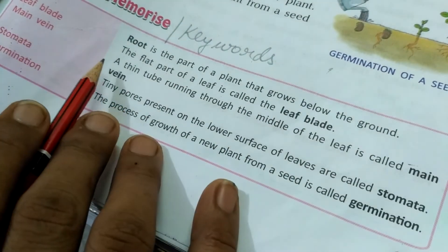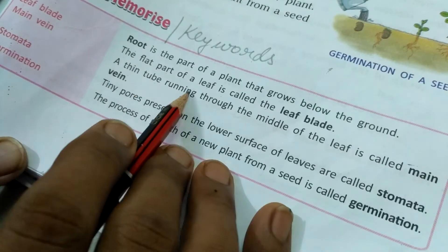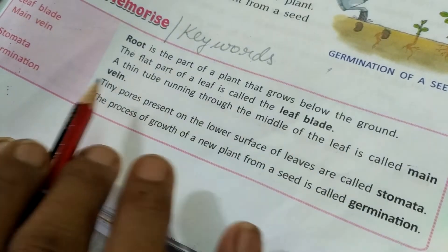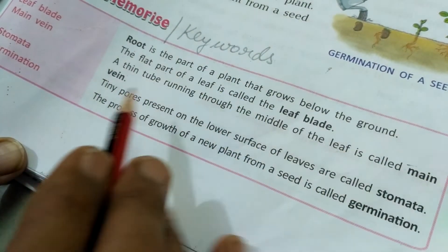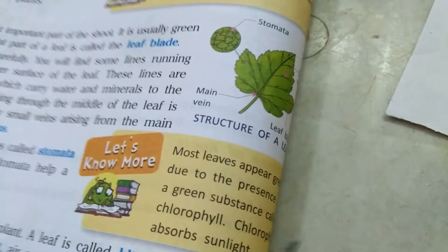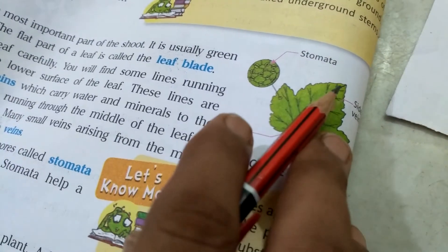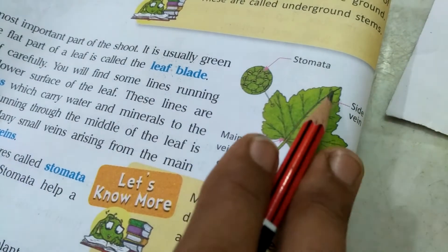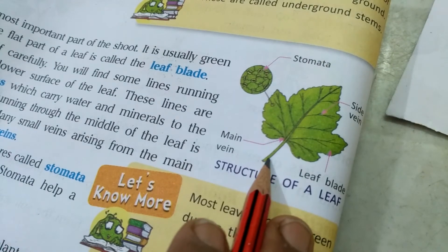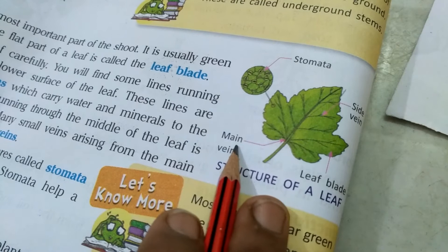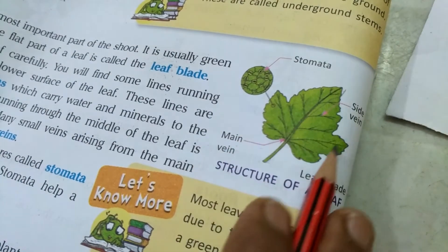Next is main vein. A thin tube running through the middle of the leaf is called the main vein. It is a tube-like structure. In the diagram, this is the leaf and this is the main vein passing through the center — through the middle of the leaf. The flat part of the leaf is known as the leaf blade.